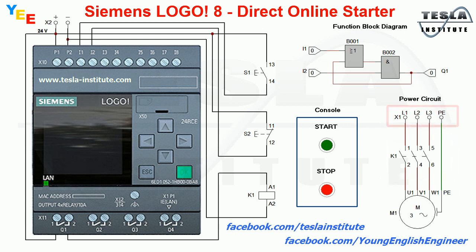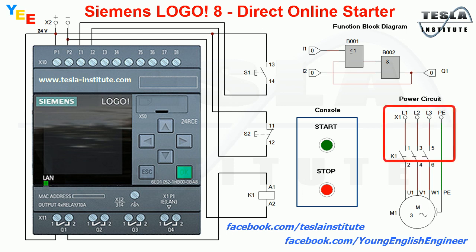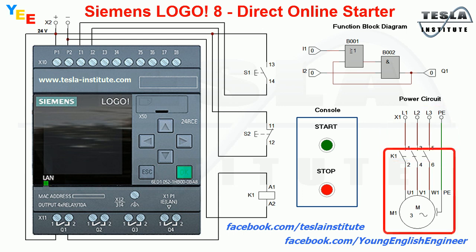Three-phase power supply is connected to terminal block X1. On the other side, terminal X1 is connected to the contacts of contactor K1. The other side of these contacts are connected to motor M1.